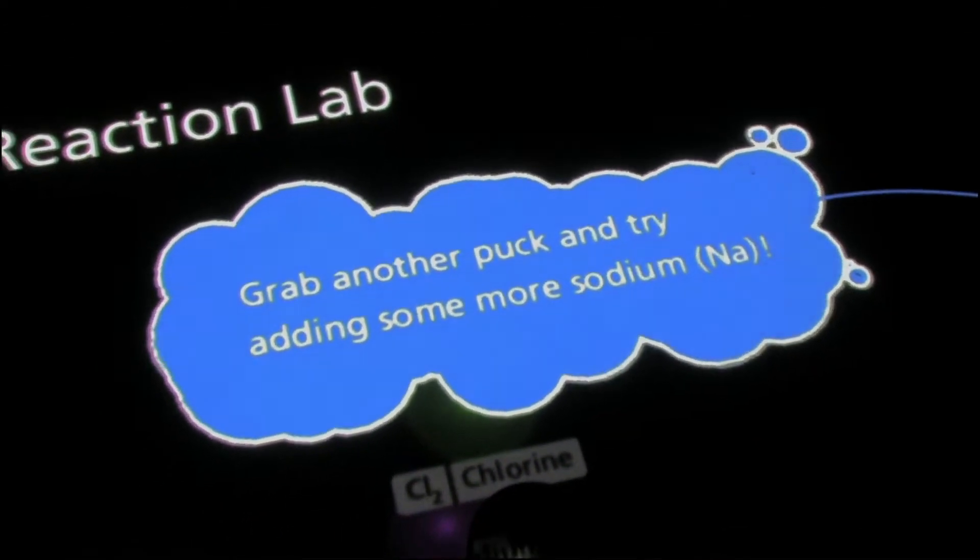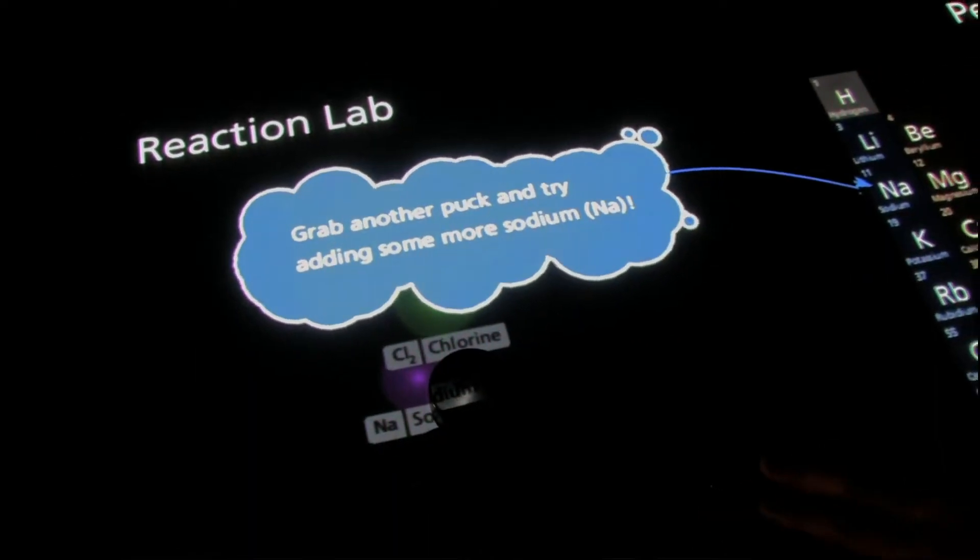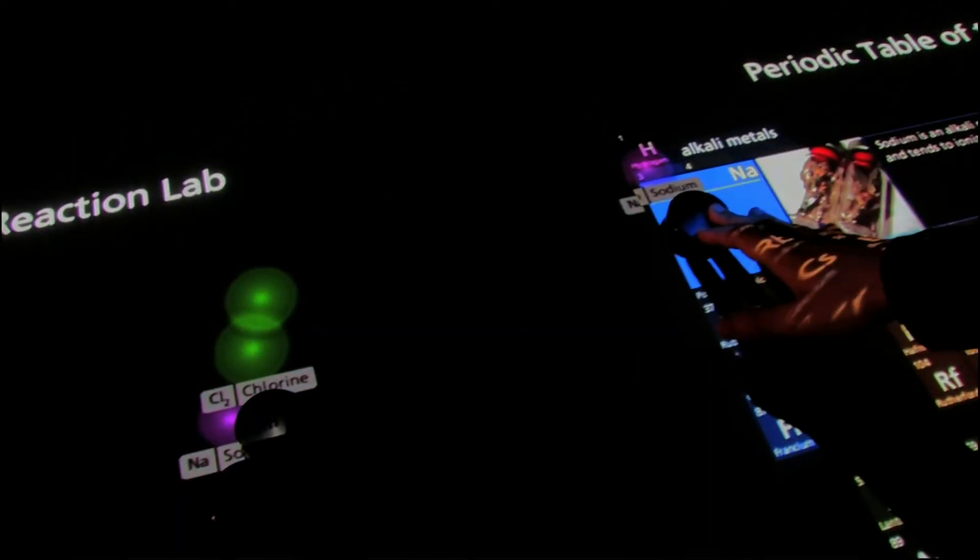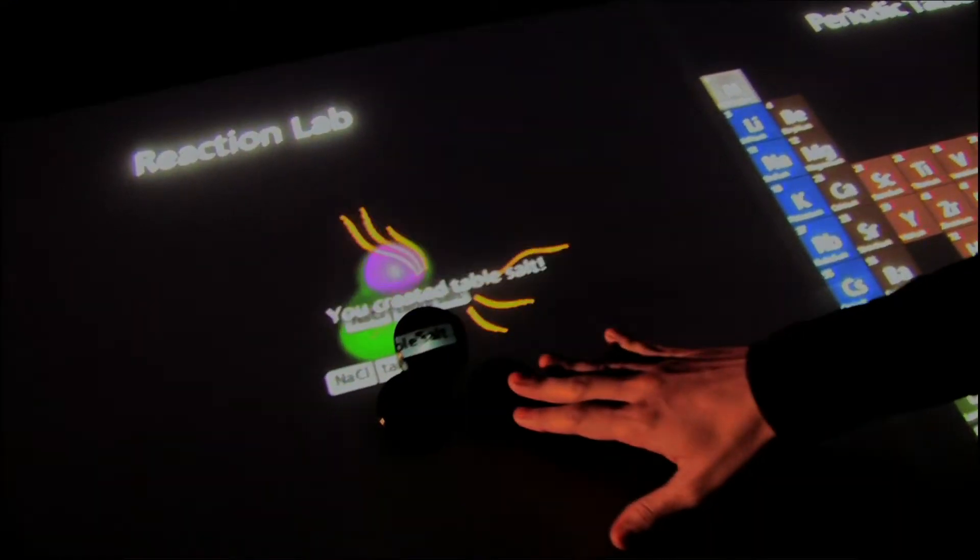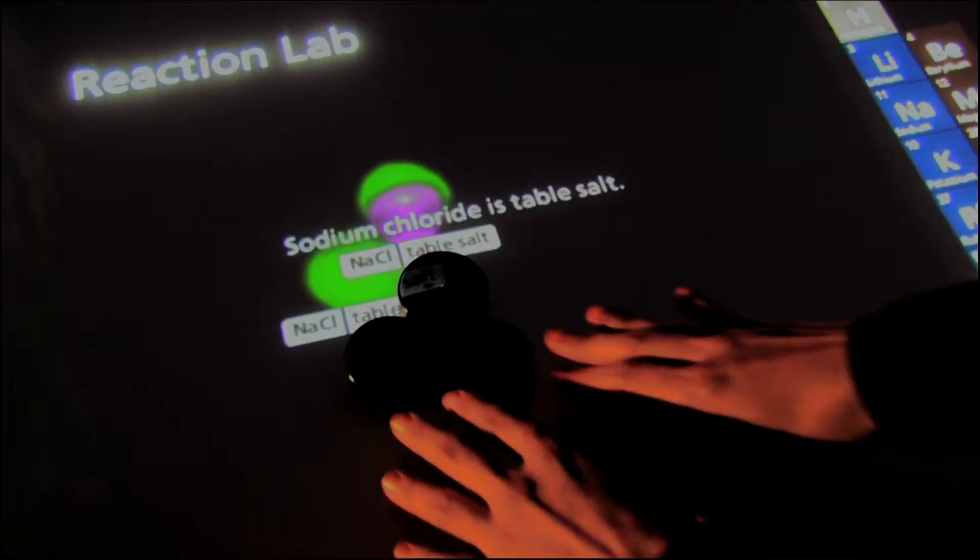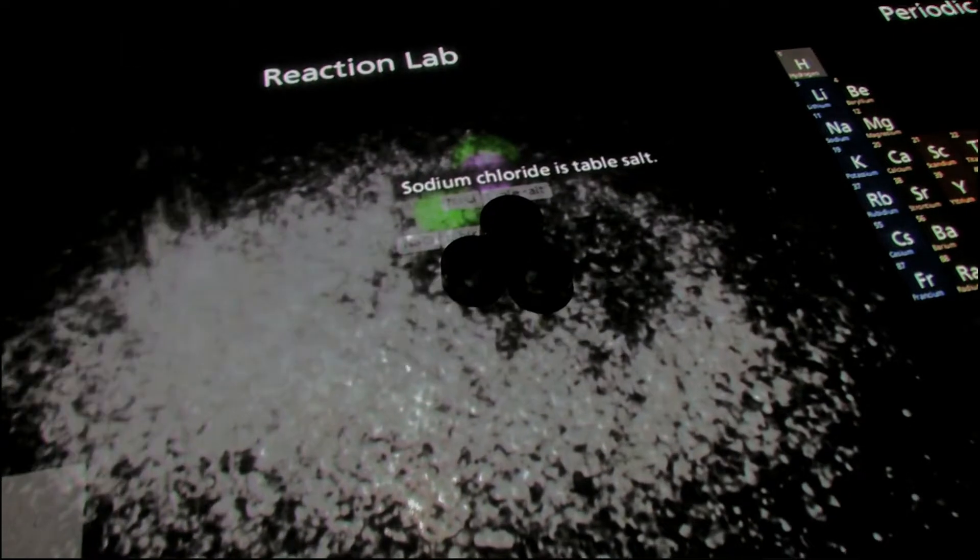So for example, we could bring sodium and chlorine together, and when we do that, we create table salt. Each of the objects, each of the atoms or molecules that you interact with, is represented by a physical object that you can hold in your hands.